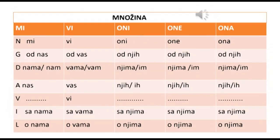Promjena imeničkih zamjenica u množini: mi – genitiv: od nas; dativ: nama ili nam; akuzativ: vidim nas; instrumental: sa nama; lokativ: o nama. Vi – genitiv: od vas; dativ: vama ili vam; akuzativ: vidim vas; vokativ: hej, vi; instrumental: sa vama. Oni – genitiv: od njih; dativ: njima; akuzativ: vidim njih ili vidim ih; instrumental: sa njima; lokativ: o njima.